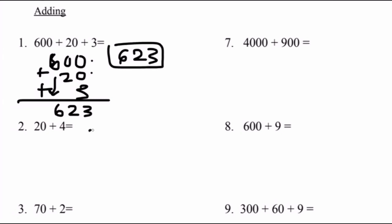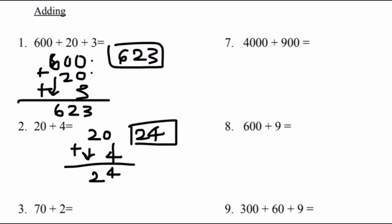Number two: 20 plus 4. We align the numbers vertically. 0 plus 4 equals 4. Bring down to 2. So our final answer is 24. Number three: 70 plus 2. Align the numbers vertically. 2 plus 0 equals 2. Bring down to 7. Our final answer is 72. 70 plus 2 equals 72.